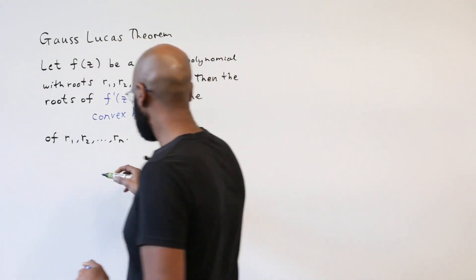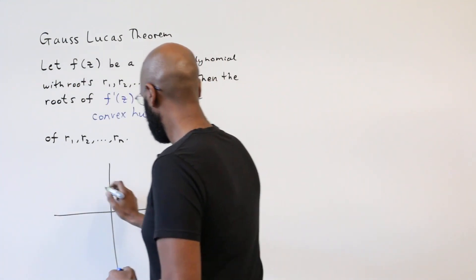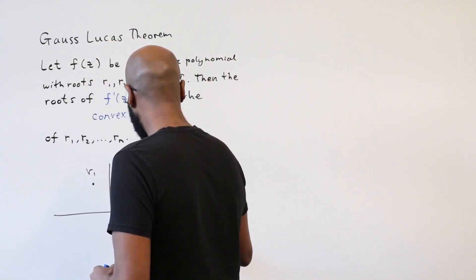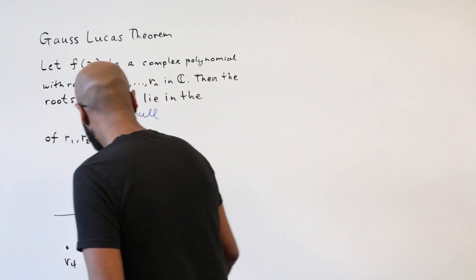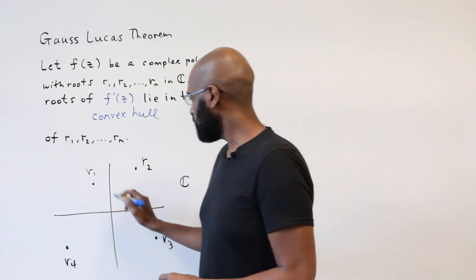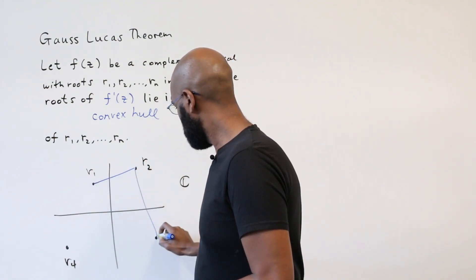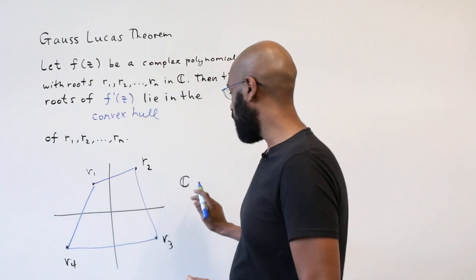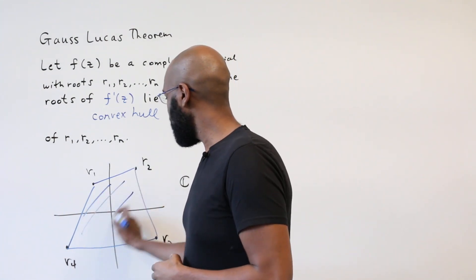Now what does that mean? Say for example in the complex plane we had our original polynomial having exactly four roots. Imagine having saran wrap around these four points, imagining these points being pinned to the complex plane, placing saran wrap around all of them and filling that in.